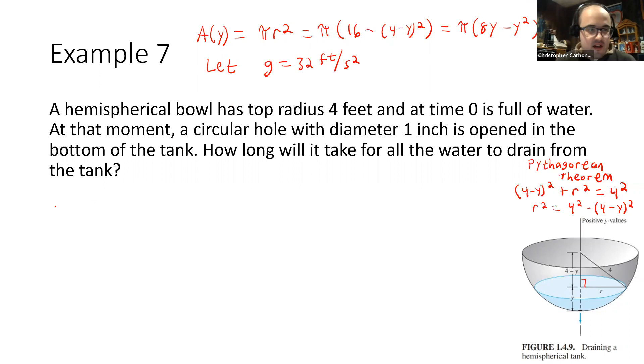And then we could express our differential equation by multiplying by this area each time. So this would be pi times 8y minus y squared times dy over dx is equal to, there on the left, for the right-hand side,